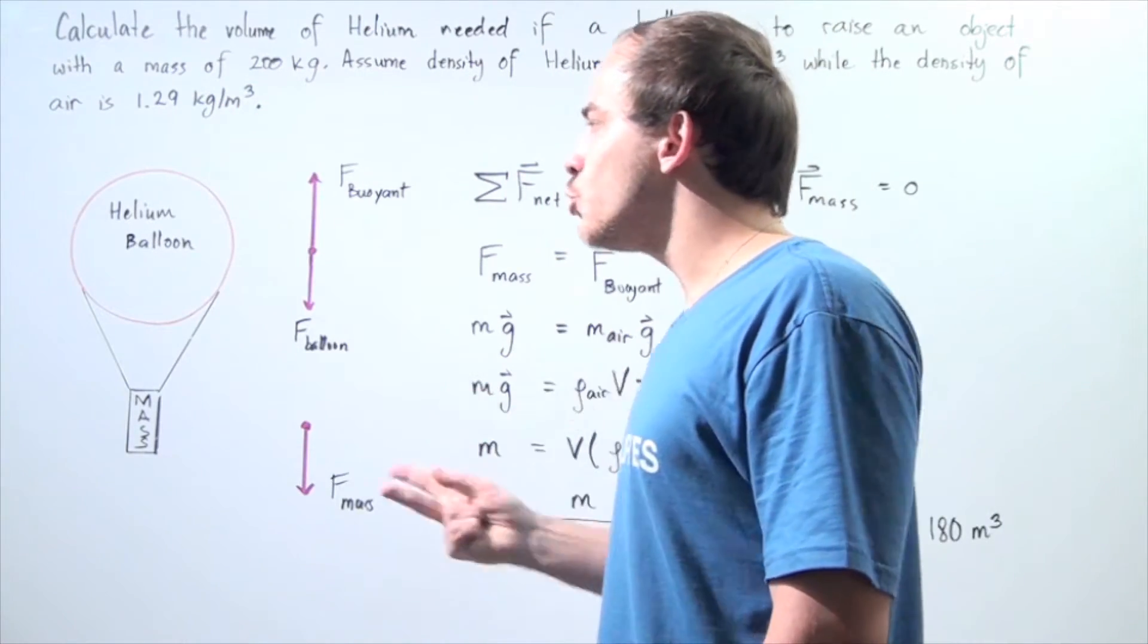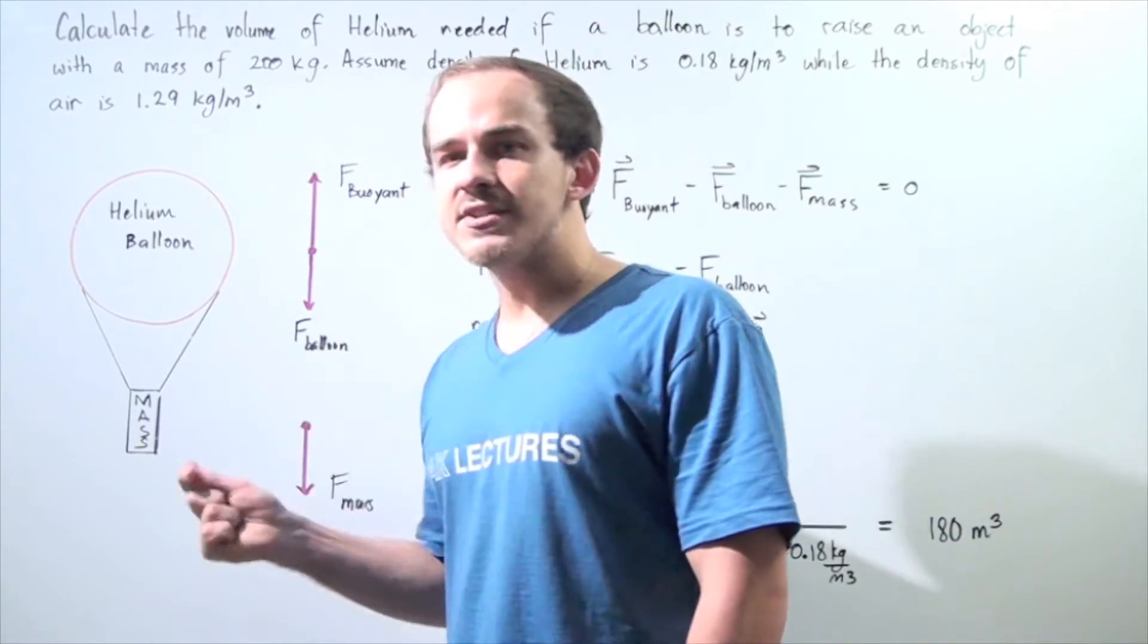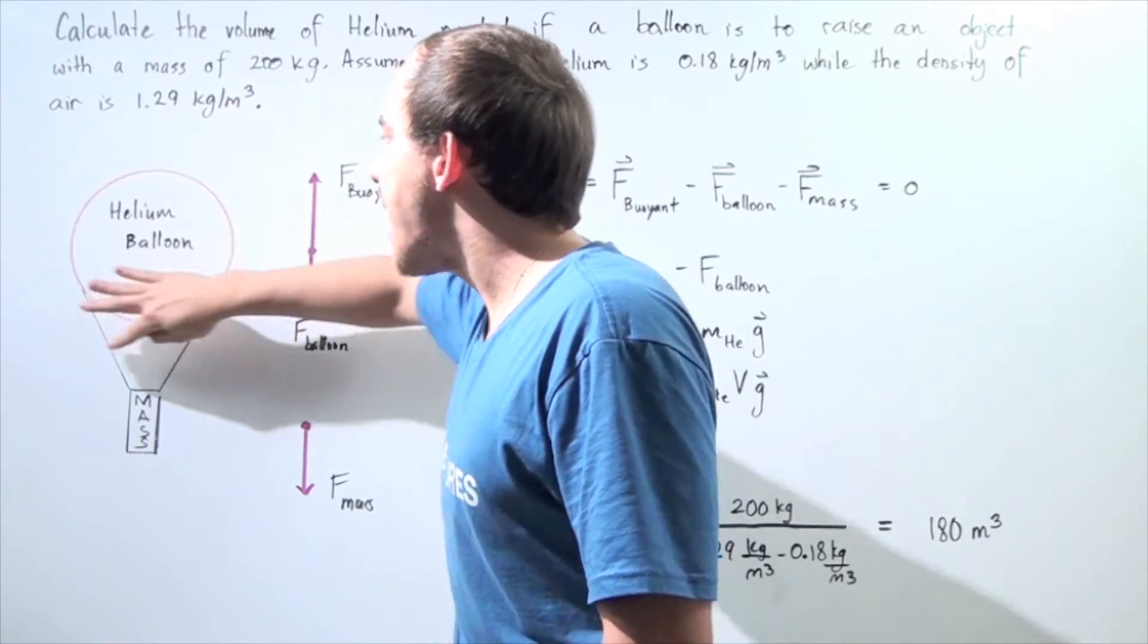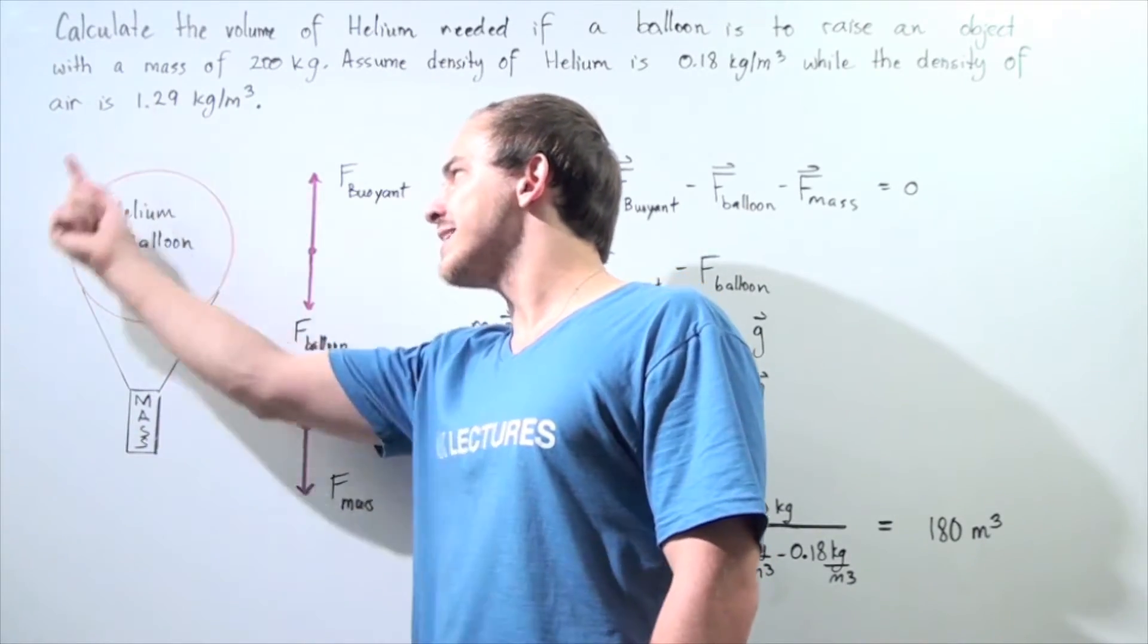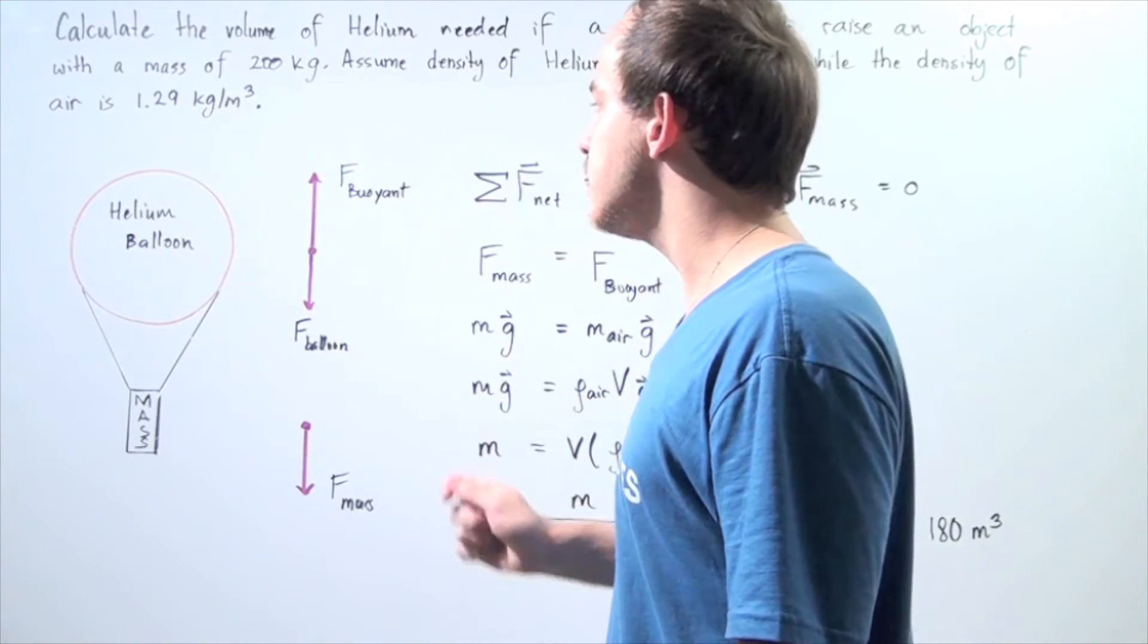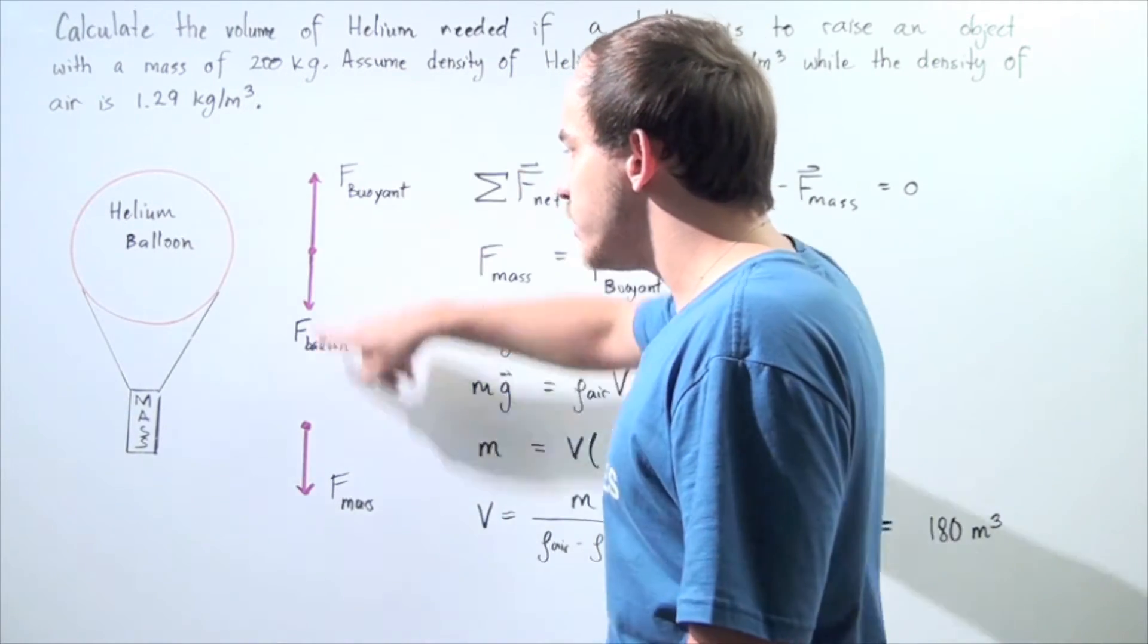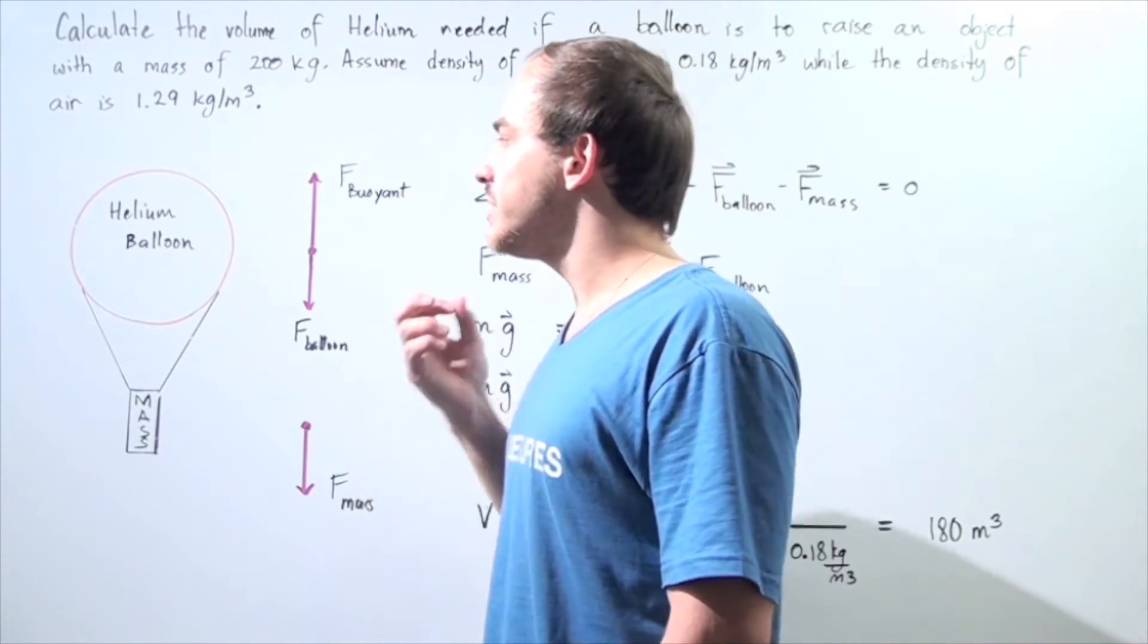Now at the same time we have two gravitational forces acting on our two objects: the gravitational force acting on the mass as well as the gravitational force acting on the mass of our balloon. So we not only have the mass of the object, we also have to take into consideration the mass of the actual balloon, the mass of the empty balloon. Since our object is in dynamic equilibrium, if we sum up all these forces acting along the same axis, that sum should give us zero.